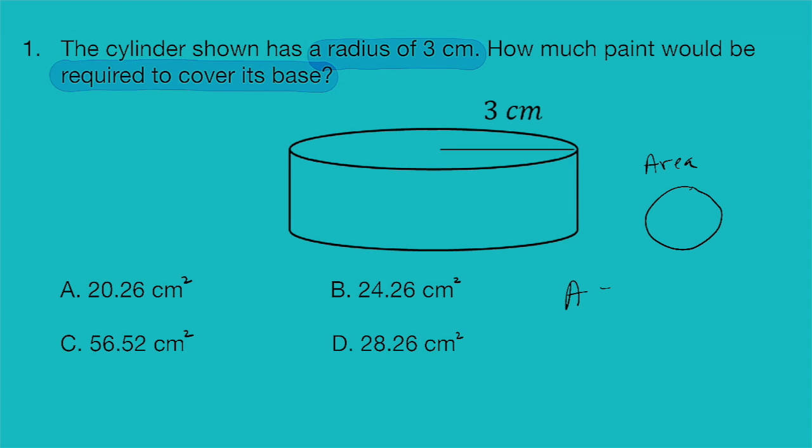The formula for that is A equals pi r squared. And so since we have the radius, and since we know that pi is 3.14, we can go ahead and solve for this equation. So the area is going to be 3.14 times 3 squared.